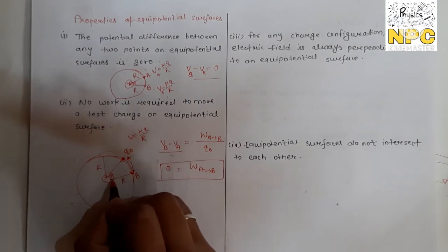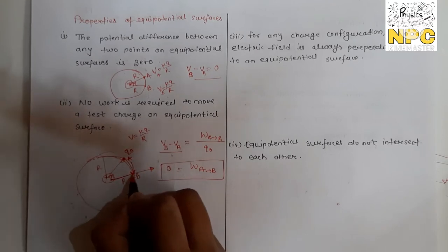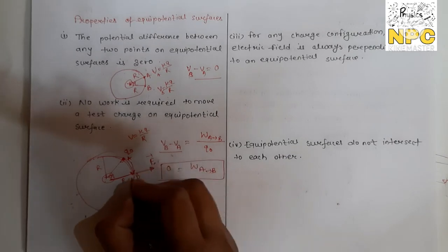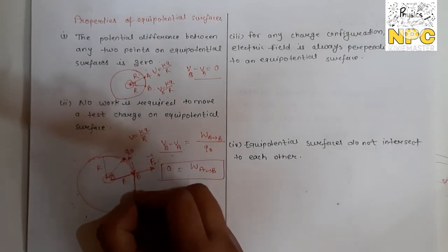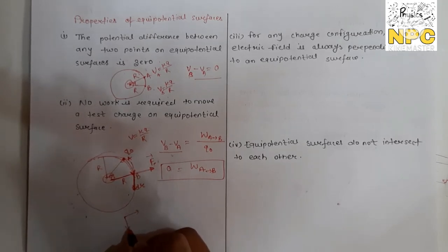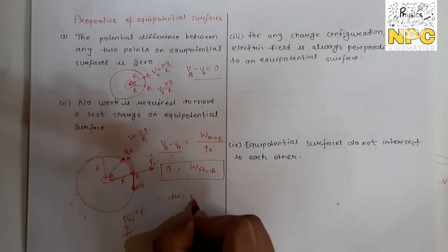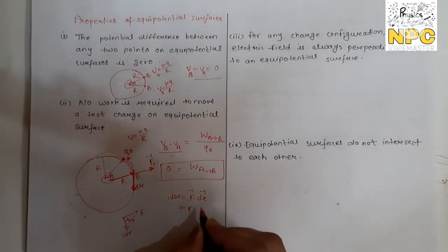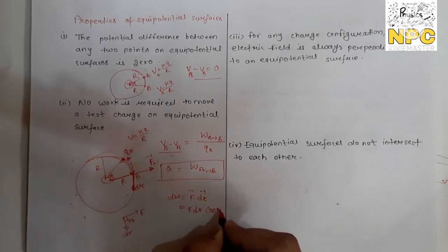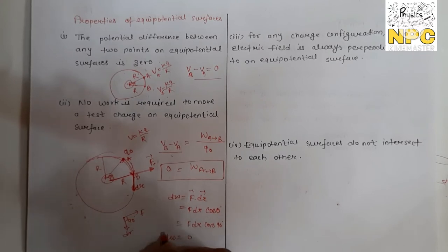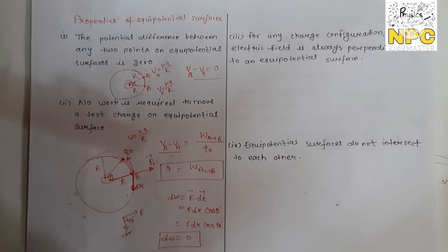This can also be understood as follows: for a positive charge, the electric field direction is away from the charge and normal to the surface. The electric force on Q₀ is in that direction. But displacement is along the surface — so the angle between force and displacement is 90°. Work done = F·dr = F dr cos 90° = 0. This confirms that work done on an equipotential surface is zero.